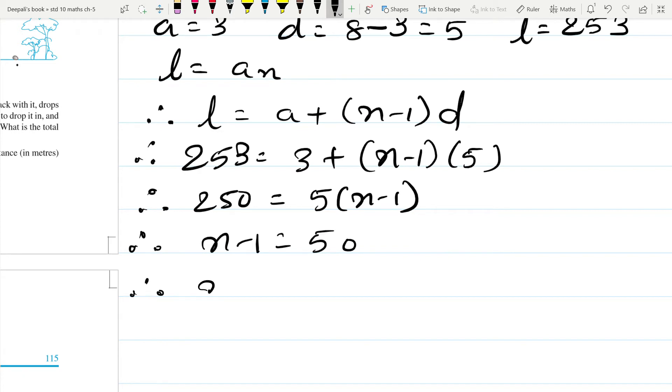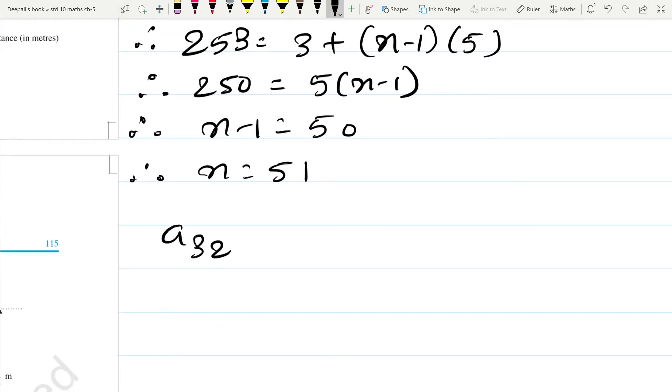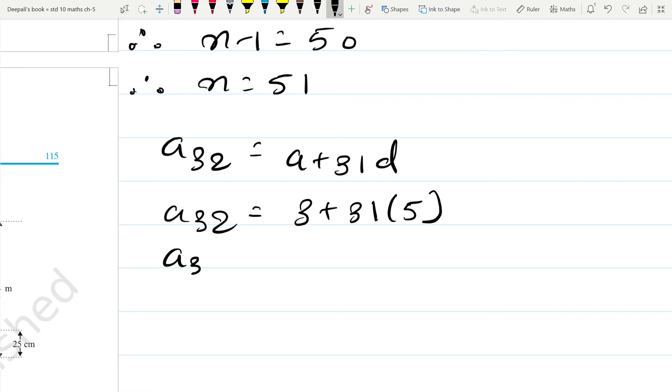And therefore N is equal to 51. Now we are supposed to find A32, which will be A plus 31D. That is A32 is equal to 3 plus 31 into 5. So A32 will be 158.